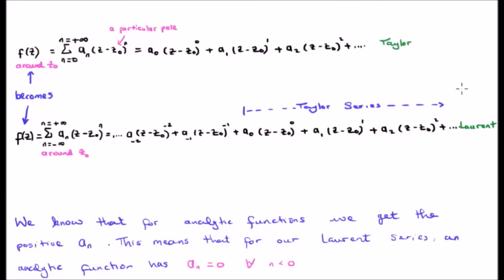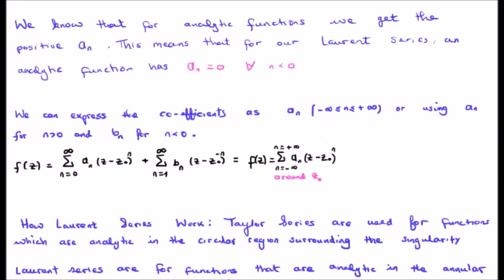Note of course with the Laurent series, half of it is the Taylor series and the rest is new. We know that for analytic functions we get the positive a sub n's. This means for our Laurent series, an analytic function has a sub n equal to zero for all n less than zero. In other words, the Laurent series is the generalized version of the Taylor series such that when your function is analytic, all the a sub n's less than zero go to zero.